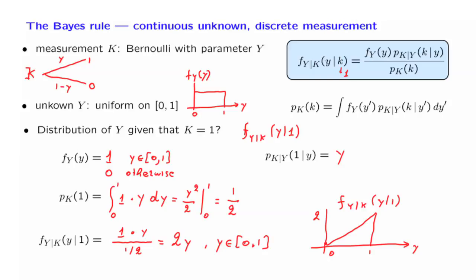As you can imagine, there are generalizations in which we observe multiple coin flips. And this is an example that we will see later on in this class.